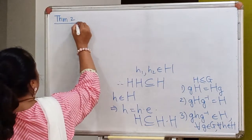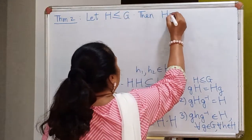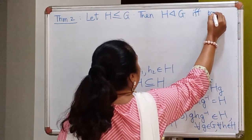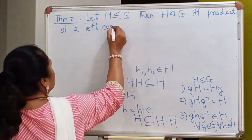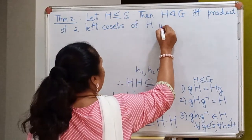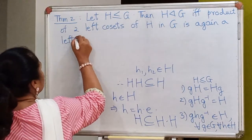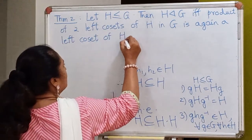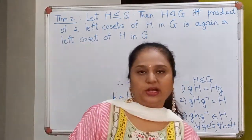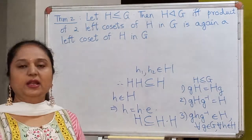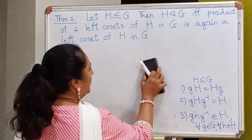Let me call this Theorem 2. Let H be a subgroup of a group G. Then we will prove that H is a normal subgroup of G if and only if the product of two left cosets of H in G is again a left coset. Since this is an if-and-only-if result, let me break up the proof into two parts.